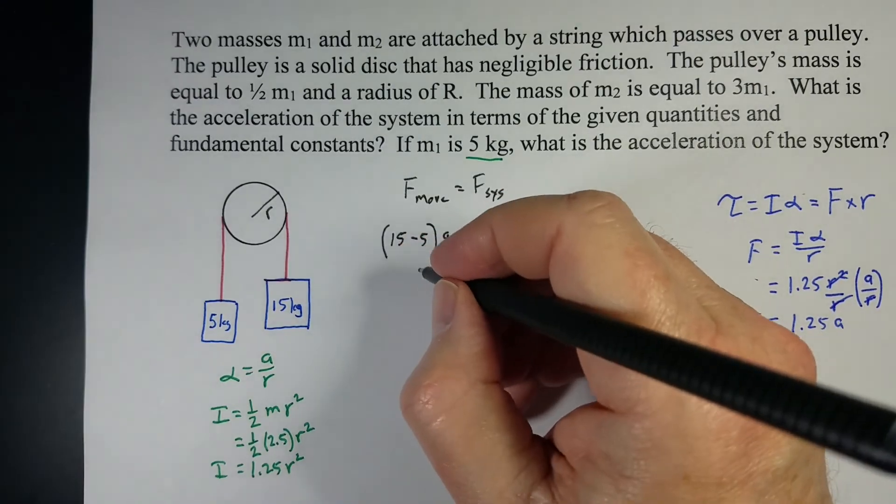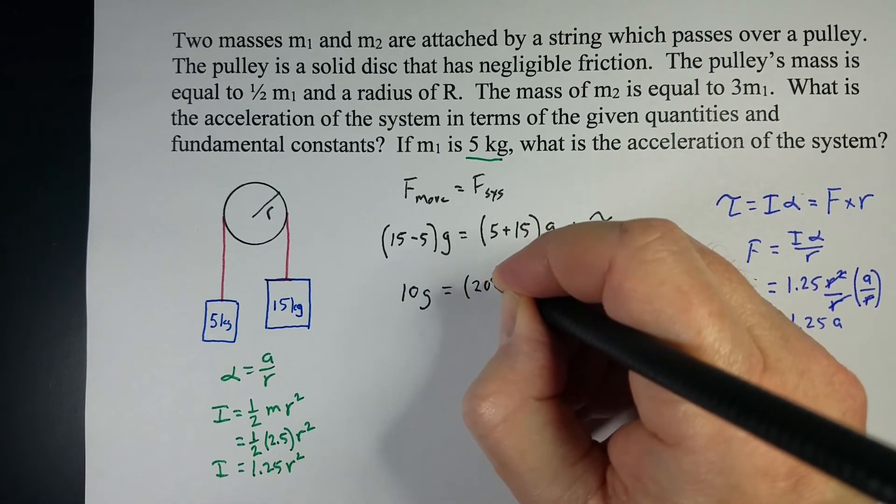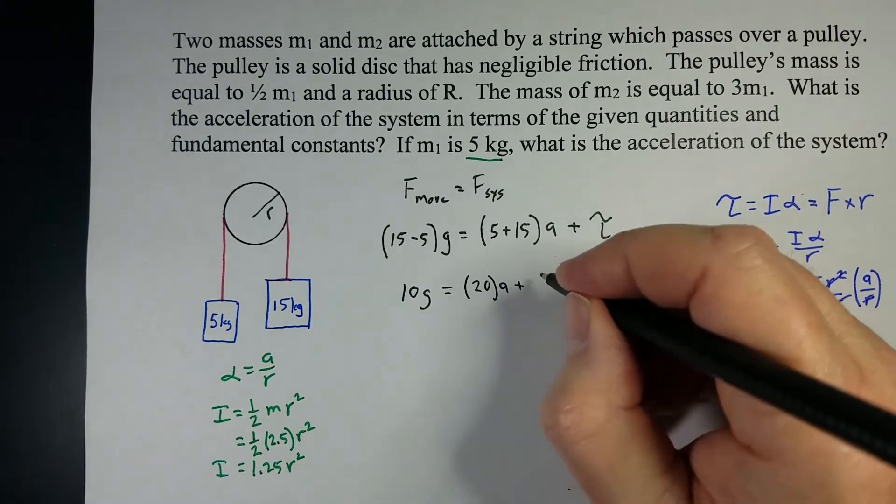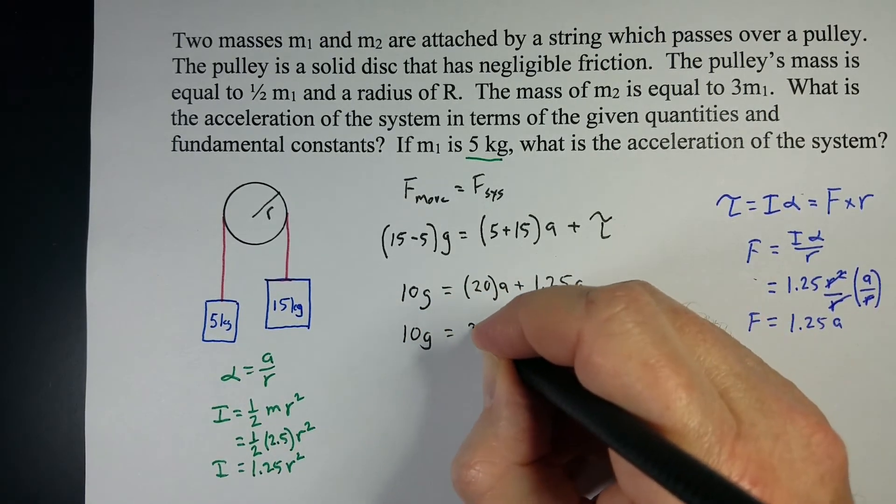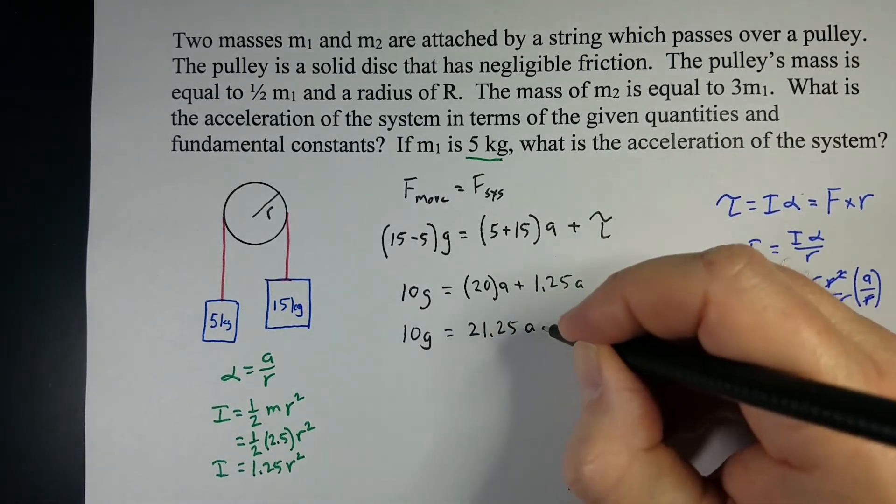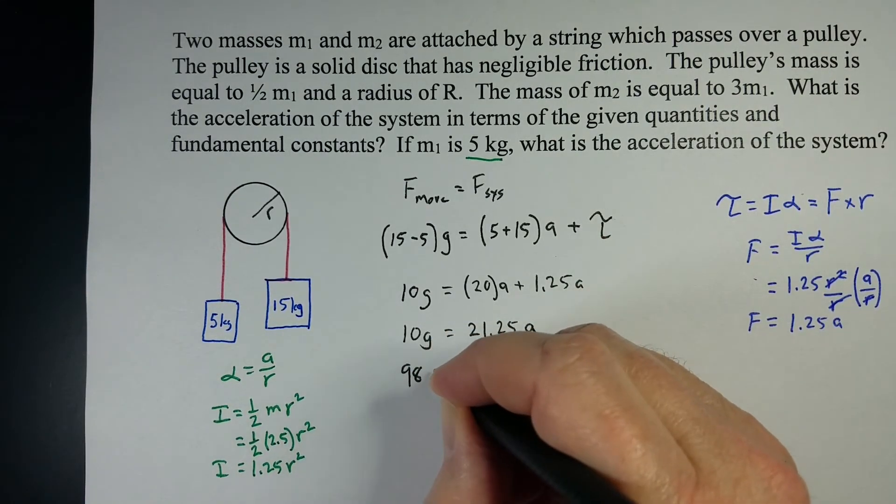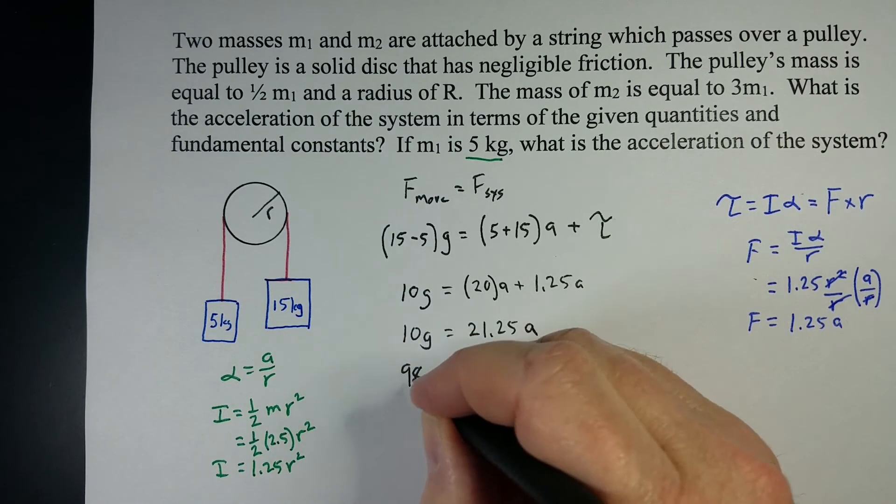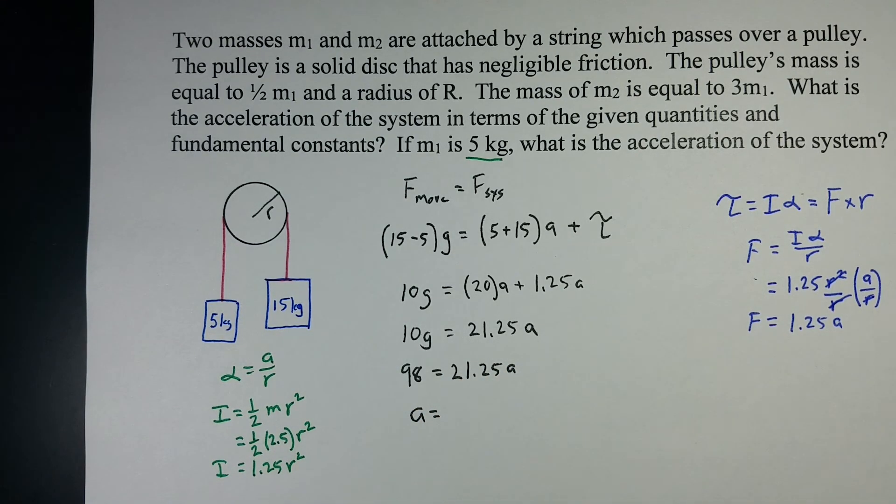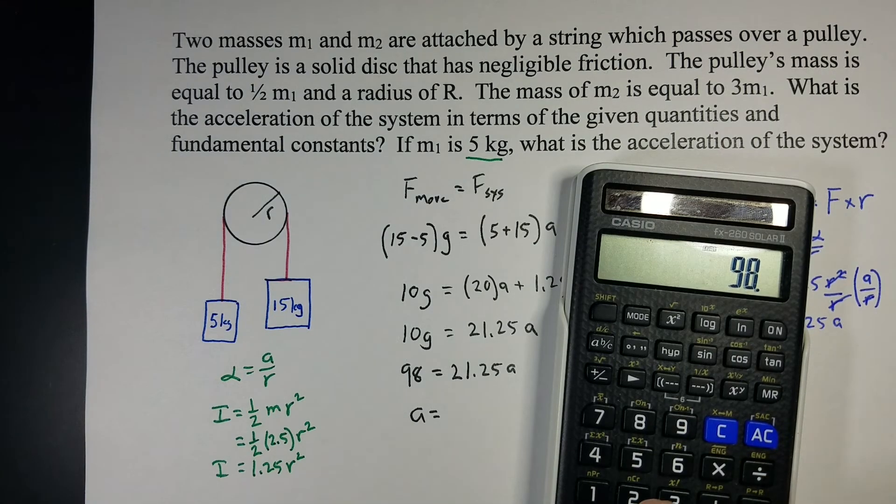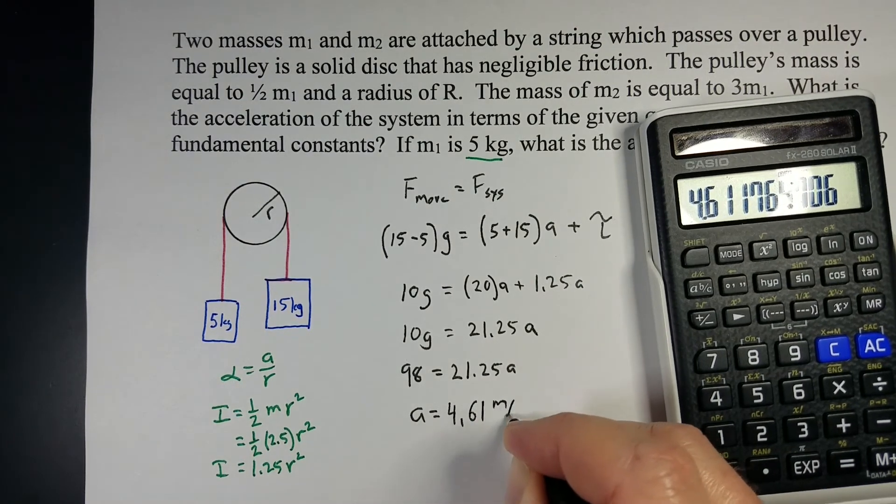Let's go ahead and plug those in. This is going to be 10 G equals 20 A plus 1.25 A. So we've got 10 G equals 21.25 A. Gravity is 9.8, so this is going to be 98 equals 21.25 A. Solve for A: we're going to take 98 divided by 21.25, and we get an acceleration of 4.61 meters per second squared.